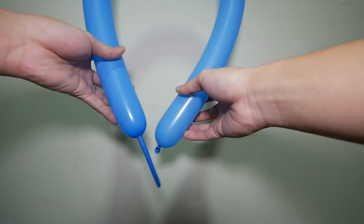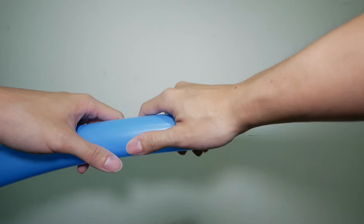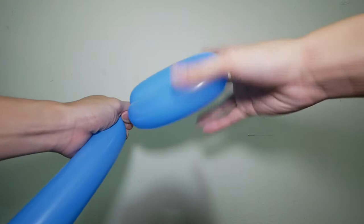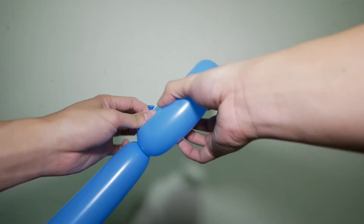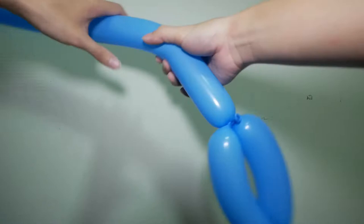Take your next blue balloon and inflate it around this length. Then we're going to do three loops, so first loop. Remember, take the nozzle and slot it to the other side so it will stay secure.